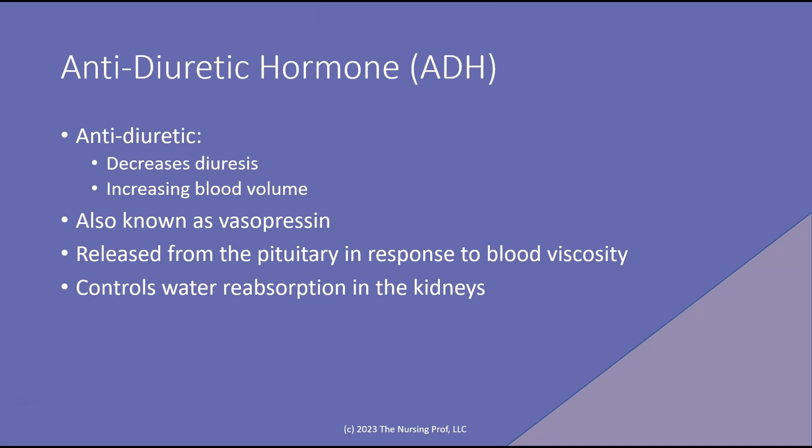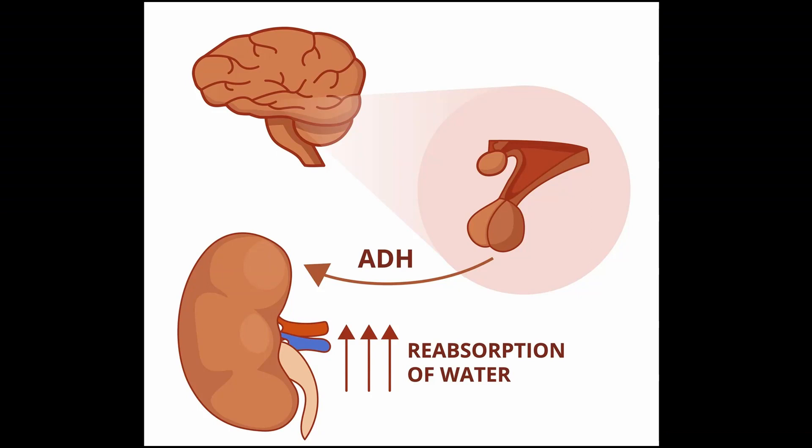ADH is also known as vasopressin. It's released from the pituitary in response to changes in our blood viscosity. As blood becomes more viscous, we're going to have changes in the levels of our ADH in order to maintain fluid volume. It controls this by controlling water reabsorption in the kidneys.